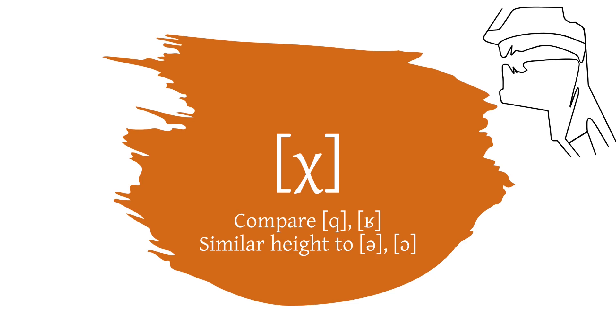To get a feeling for this place of articulation, you can compare the consonants ka and ra, and it may also be helpful to compare the tongue height to vowels such as u and o.